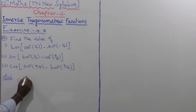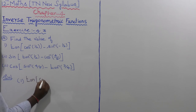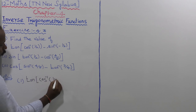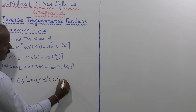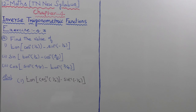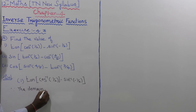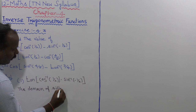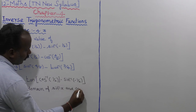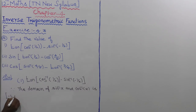Let us take the first substitution. The given value is tan of cos inverse of 1 by 2 minus sin inverse of minus 1 by 2. Since the domain of sin inverse of x and cos inverse of x is the closed interval minus 1 to plus 1.